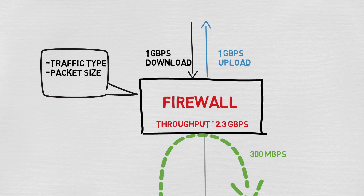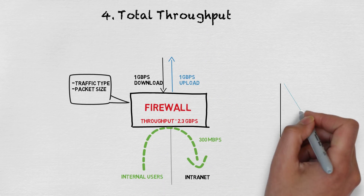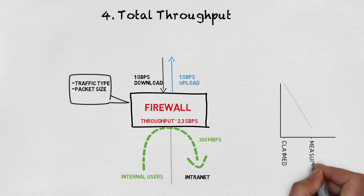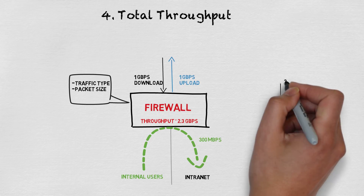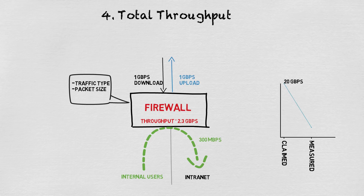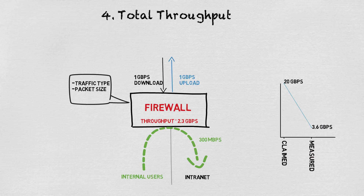With the majority of your traffic probably being TCP, your real-world experience will be much less than what's advertised by the vendor. In last year's NSS Next Gen Firewall report, there was a vendor that claimed 20 gigabits of throughput, but when NSS turned on their real-world traffic profile, that number went down to 3.6 gigabits.